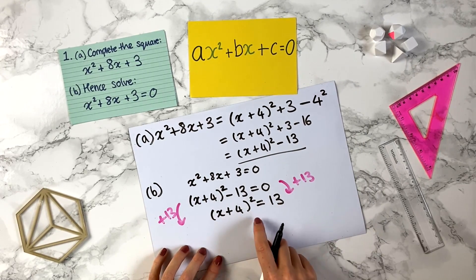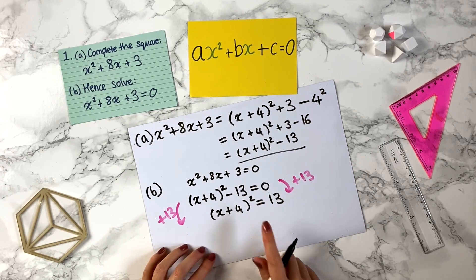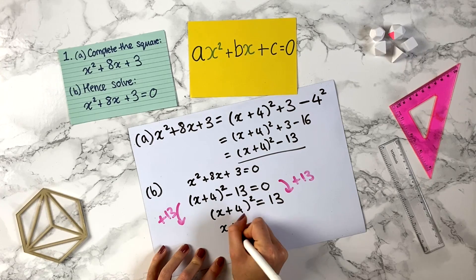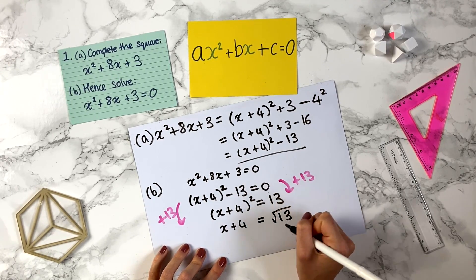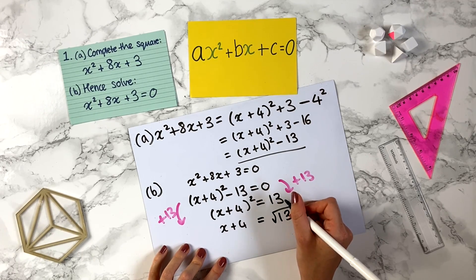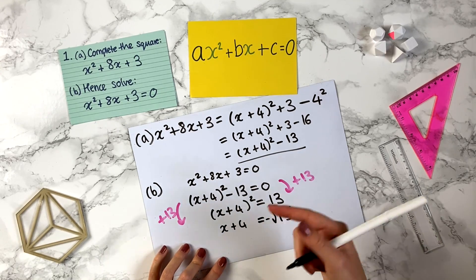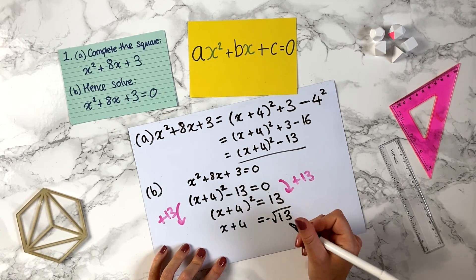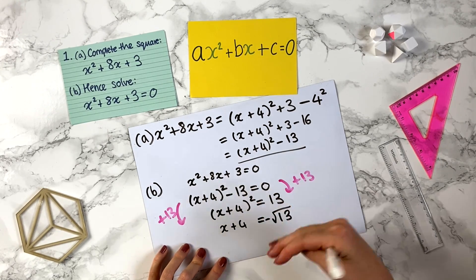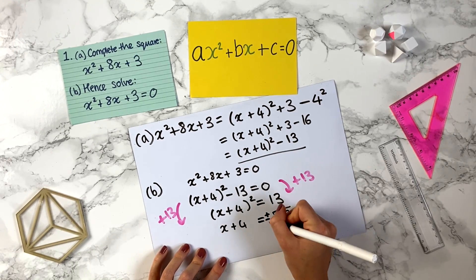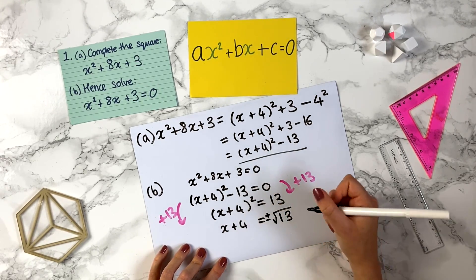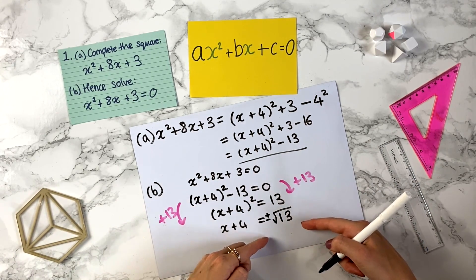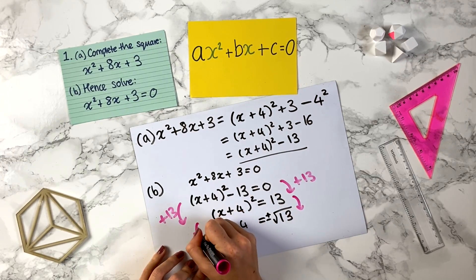We've got a squared sign here and we want to get rid of it. To reverse squaring, we take the square root. If we square root both sides, we get x plus 4 because we're square rooting a square — that cancels each other out. We want the square root of 13 on the other side. But be careful: both the positive square root of 13 squared is 13, and also the negative square root of 13 squared is 13, because when you times a minus by a minus, it cancels out. So every time you square root in this situation, you want plus or minus the square root of 13.